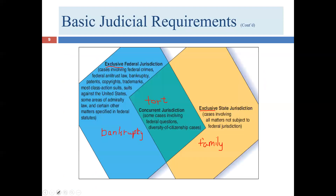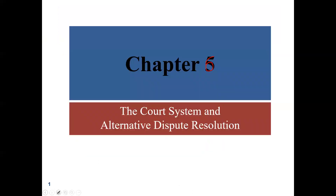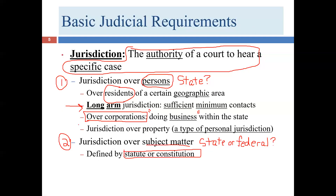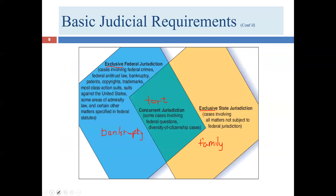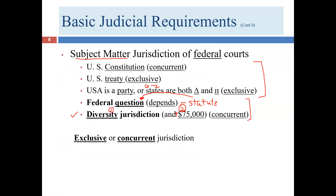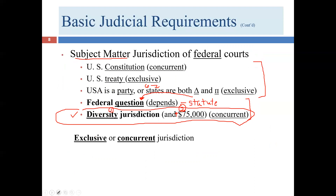We've now covered the first two types of jurisdiction fairly well — personal jurisdiction and subject matter jurisdiction — and we'll talk more about diversity jurisdiction specifically in a bit. We're going to carve that out for later discussion. Now let's talk about some other types of jurisdiction.